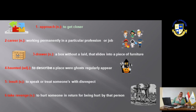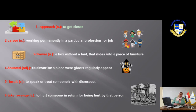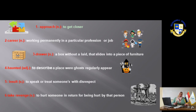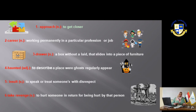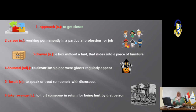Mr. Oates didn't believe in ghosts and agreed to buy it anyway. So Mr. and Mrs. Oates, their oldest son Washington, their daughter Virginia, and their two twin boys moved into Canterville Chase. None of them was afraid. But something mysterious kept happening. Underline the word 'mysterious.' Mysterious means weird or unknown.